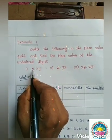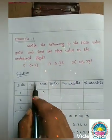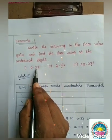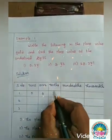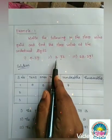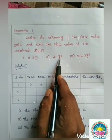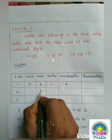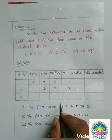The left side number is 0, so ones place is 0. The right side starts with tenths. So 3 is in the tenths place, 7 is in the hundredths place. Do you understand? Now the second question: 2.73. Here 2 is in the ones place, 7 is in the tenths place, 3 is in the hundredths place. The thousandths place is not given.